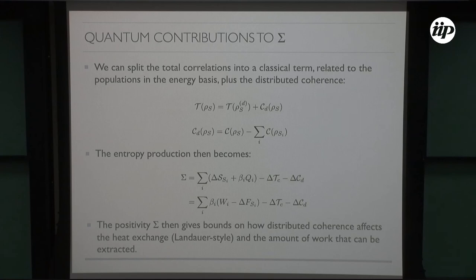Then this will be the change in distributed coherence. The interesting thing here is that if you now use this in the spirit of Landauer, using the fact that entropy production is non-negative to bound heat or to bound work, then you have a contribution to these bounds on heat and work which are related to distributed coherence. I think that's all I had to say. Thanks.